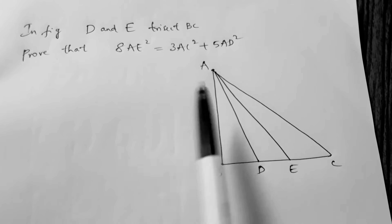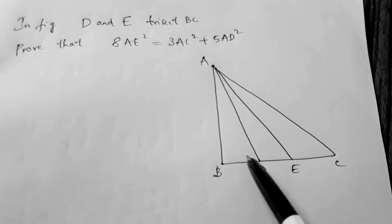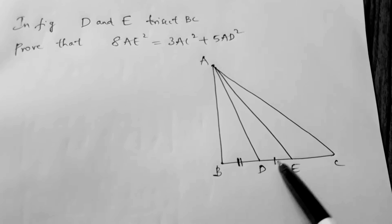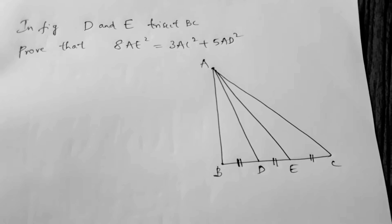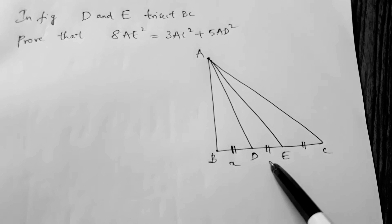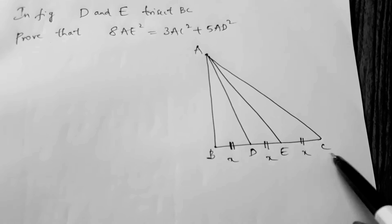In the figure, D and E trisect BC. Trisect means BD equals DE equals EC. So I will consider each of these three equal parts as X.